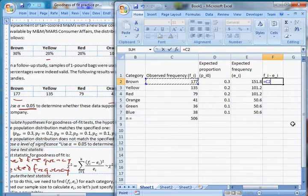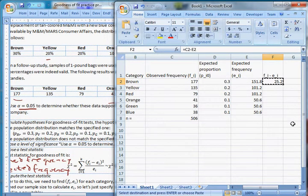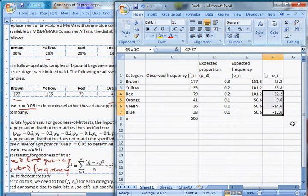This is going to be 177 minus 151.8, it's going to be 25.2. If you're doing this by hand, you have to do this several times. But if you're doing it on a computer, you can just copy and paste it. If you've done this right, these should add up to zero. But those are deviations from our expectation.